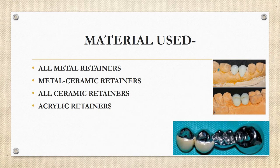The next classification is based on material used: all metal, metal ceramic, all ceramic, or acrylic. All metal can be either partial or full coverage. They possess good strength as the entire retainer is made of metal, but they compromise aesthetics and don't look good. They can only be used for posterior teeth and require minimal tooth preparation.